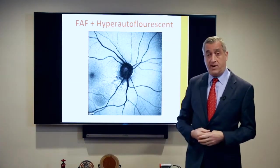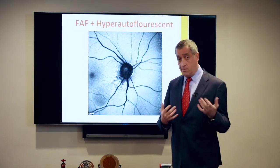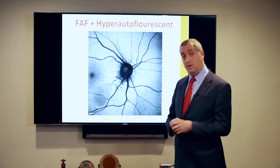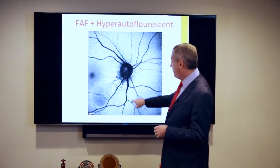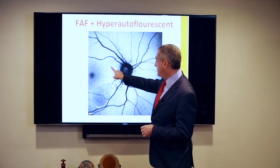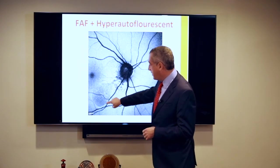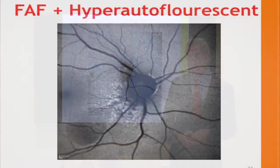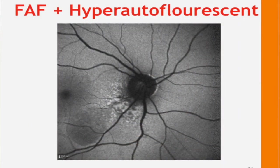On fundus autofluorescent imaging — the best way to see lipofuscin — we can see definite hyper-autofluorescence around the disc. We can also actually see the subretinal fluid, which may be quite fresh because there's not a lot of orange pigment in it. So this tumor has thickness, orange pigment, and subretinal fluid. With thickness of two or more millimeters, that's a melanoma.